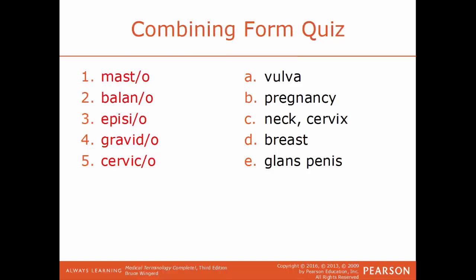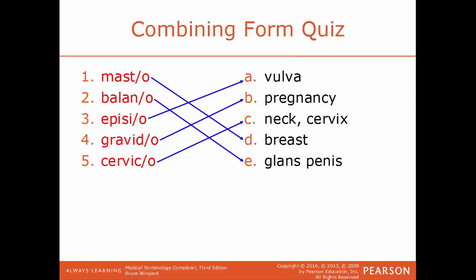We'll finish this chapter with a combining form quiz. Terms on the left — Masto, Bilano, Epizio, Gravido, and Cervico — match to terms on the right — vulva, pregnancy, neck or cervix, breast, and glans penis. Masto goes to breast, Bilano goes to glans penis, Epizio goes to vulva, Gravido goes to pregnancy, Cervico goes to neck or cervix. That brings us to the end of this chapter, one of the longer chapters in this video series. We will continue with chapter 13 in our next video.